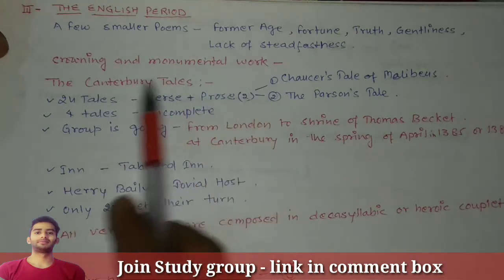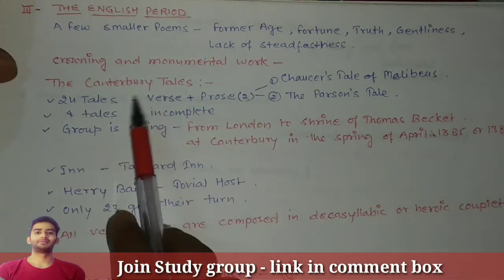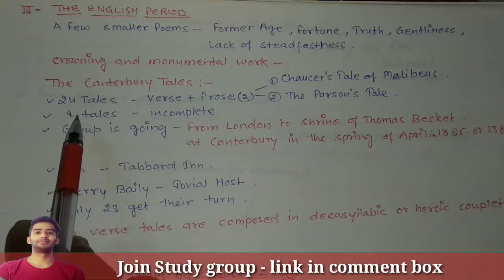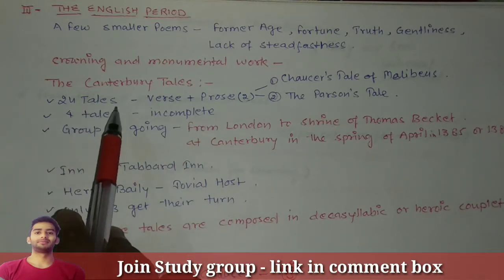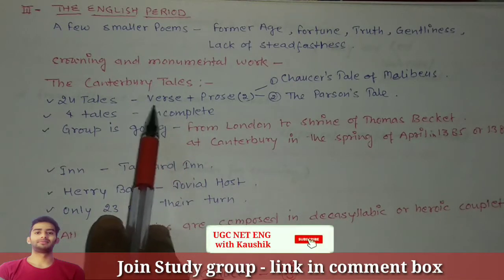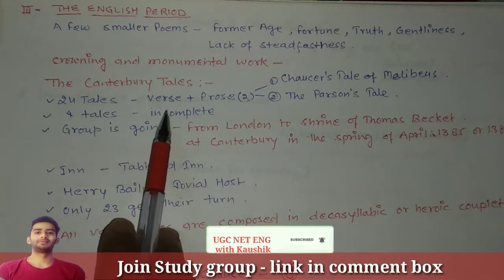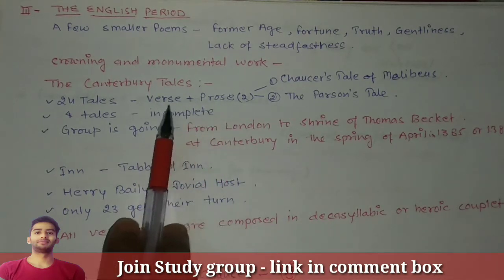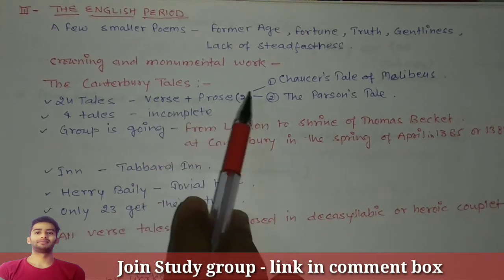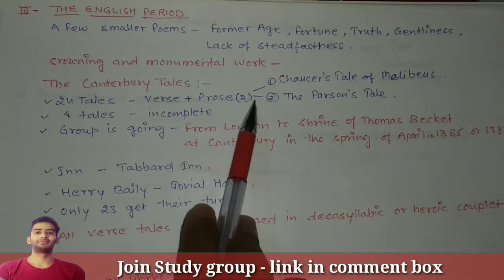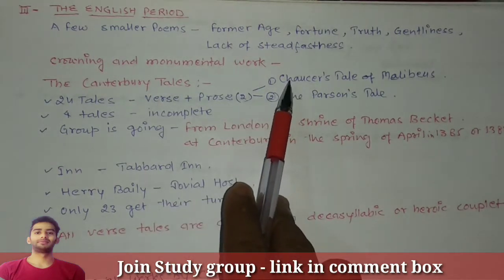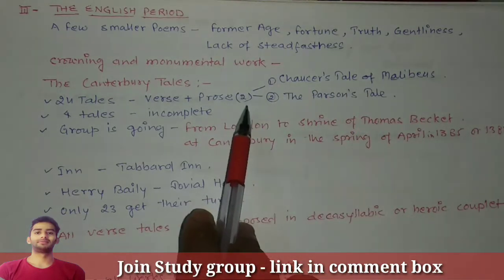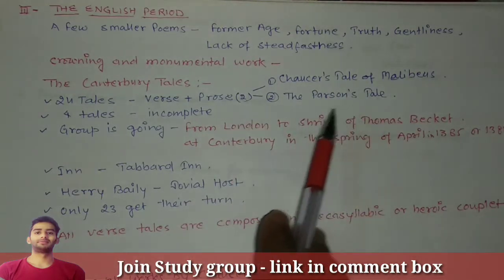The crowning and monumental work was the Canterbury Tales. Let's see some facts about it. There are 24 tales consisting of both verse and prose. There are only two prose tales: Chaucer's Tale of Melibeus and the Parson's Tale.